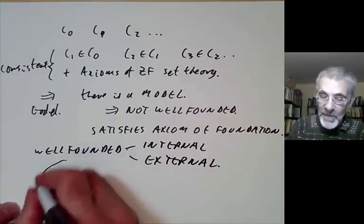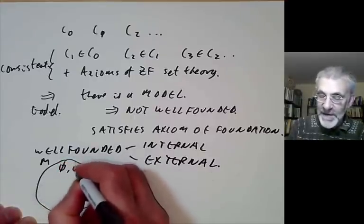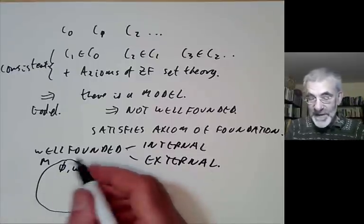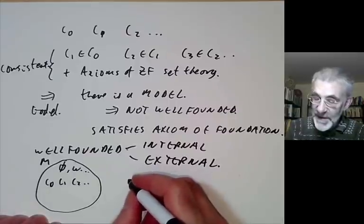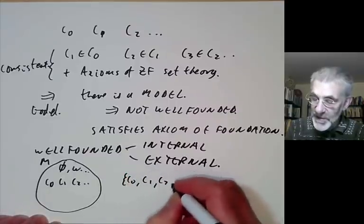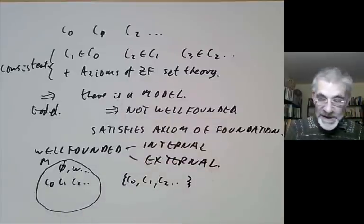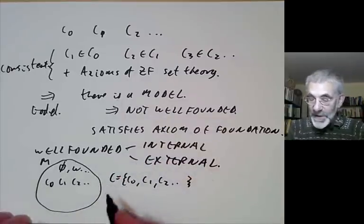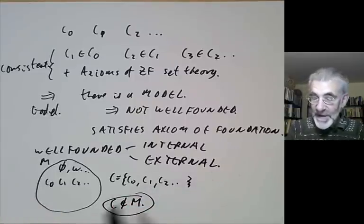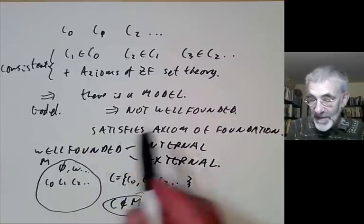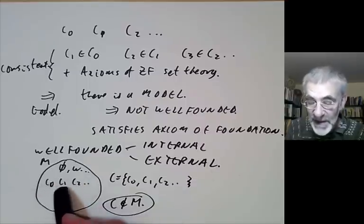Suppose you've got a model of set theory — I'll write it as a collection of things. Inside this model we've got the empty set, ω, and all the other sets you're used to, plus these funny constants c0, c1, c2, and so on. The set C = {c0, c1, c2, ...} doesn't satisfy the axiom of foundation — it contains no minimal element under the membership relation. And the key point is that this set C is not in the model M.